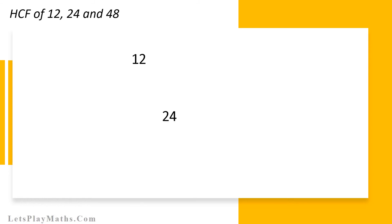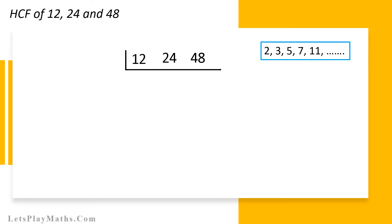Let's find out HCF of 3 numbers. The numbers are 12, 24 and 48. First, we must find out the lowest prime number that can divide 12, 24 and 48 all together. Here is the list of prime numbers from which we have to find the lowest prime number that will divide 12, 24 and 48 all together. As we know, 12, 24 and 48 can all be divided by number 2. Let's consider it as our lowest prime number.